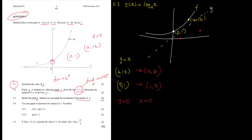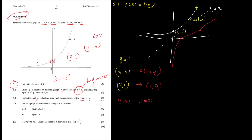Draw the line y = x as a reference, then draw your new graph g, which is the reflection. Mark the points (16, 4) and (1, 0). You have your two required points, giving you four marks, and you now have eight marks total — all coming quite easily.